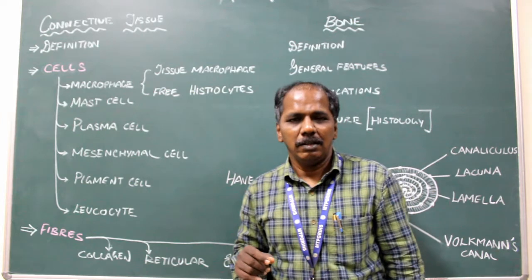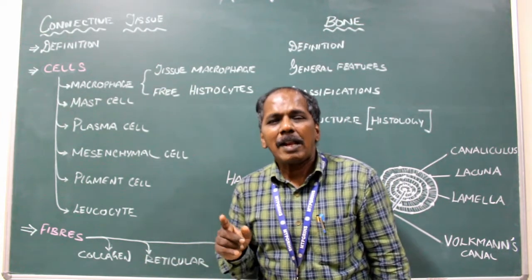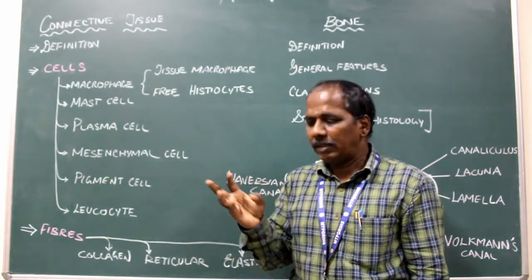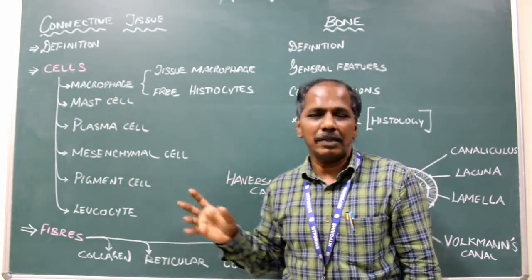Mesenchymal cell: It is one of the layers of cells present in the trilaminar germ disc of embryo. There are three layers: ectoderm, mesoderm, endoderm. So mesoderm, that is the mesenchymal cells.